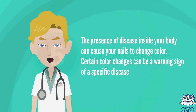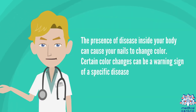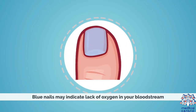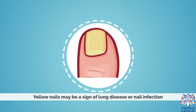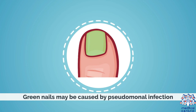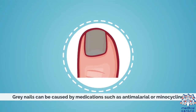Color change: the presence of disease inside your body can cause your nails to change color. Certain color changes can be a warning sign of a specific disease. Blue nails may indicate lack of oxygen in your bloodstream. Yellow nails may be a sign of lung disease or nail infection. Blue half-moon nails may indicate poisoning. Green nails may be caused by pseudomonal infection. Black nails may be due to vitamin B12 deficiency. Gray nails can be caused by medications such as antimalarials or minocycline.